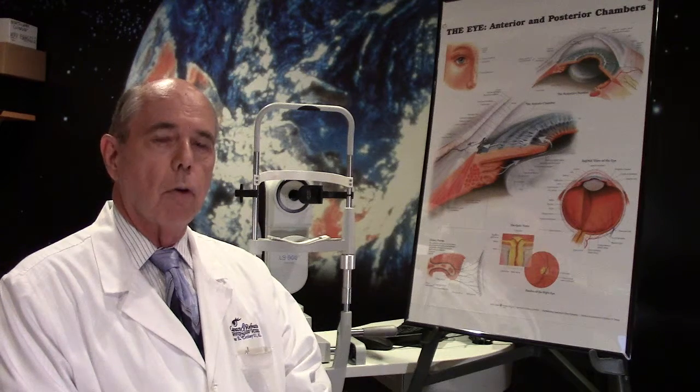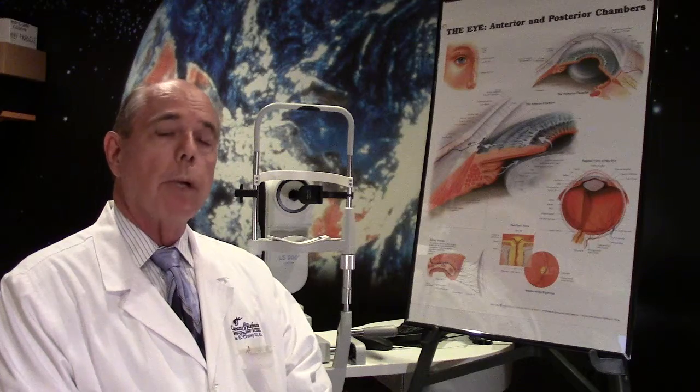After doing the examination, dilating their eye, and checking everything over, what I found was that he had an emboli, or plaque, or what we call a Hollenhorst plaque, in the blood artery inside of his eye.